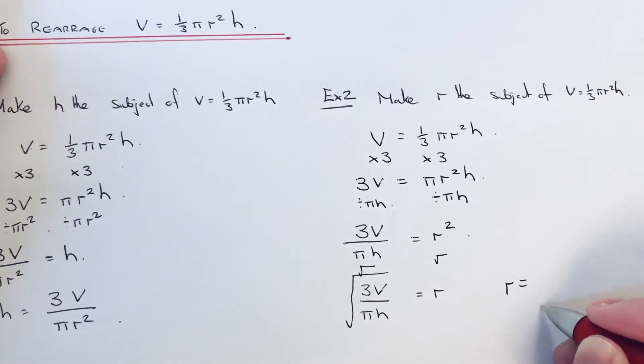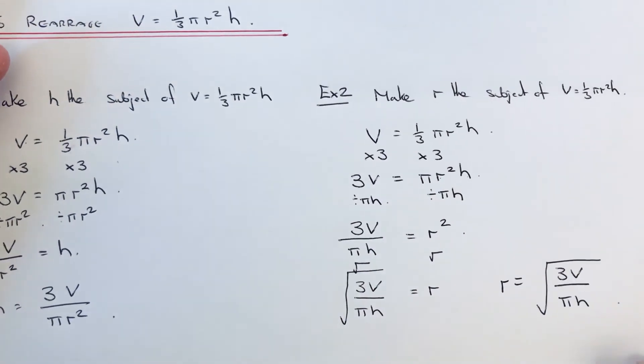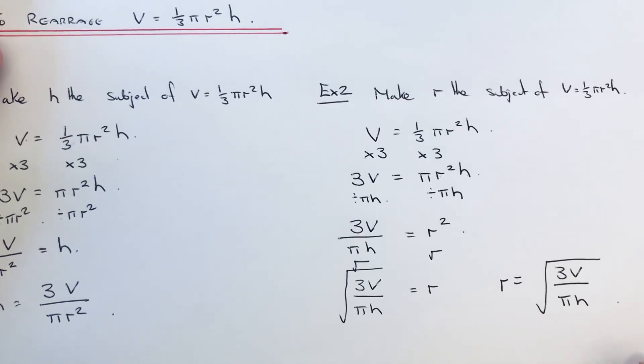Let's just put r on the correct side, and that is the formula for working out the radius of the cone if you're given the volume and the height.